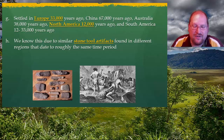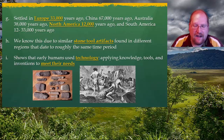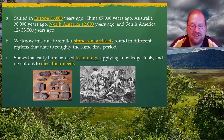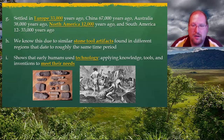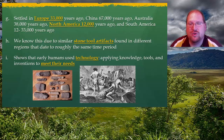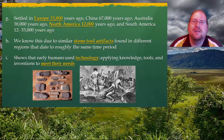Geologists have found the age of rocks, and based upon the age of rocks they can deduce when they were used as tools. Finding these tools shows that early humans used technology to meet their needs. Keep in mind, technology simply means applying knowledge, tools, and inventions to meet needs. What we call technology today is much different than back then — back then an arrowhead, a spear, a spoon, or a hammer are examples of technology tools that these people would have developed.